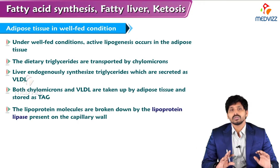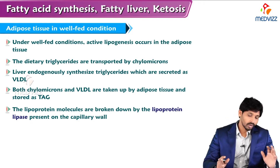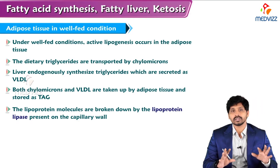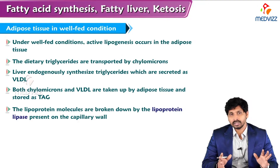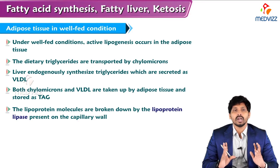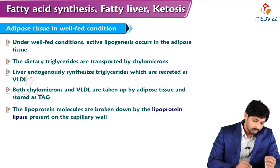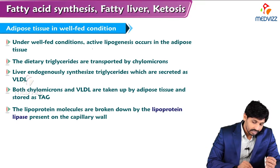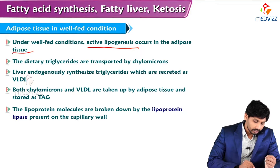In the well-fed condition, excess calories will be converted to fatty acids, and these synthesized fatty acids attach to glycerol to form TAG which are stored in adipose tissues. So under well-fed conditions, active lipogenesis occurs in adipose tissue.